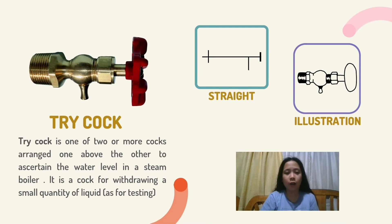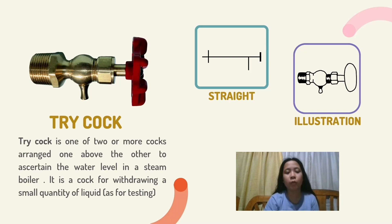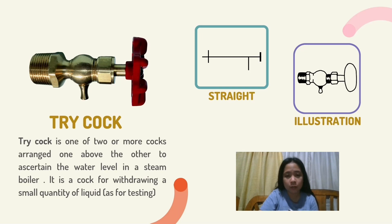A tricock. Tricock is one of two or more cocks arranged one above the other to ascertain the water level in a steam boiler. It is a cock for withdrawing a small quantity of liquid, as for testing. Here is the symbol: straight, and the illustration.